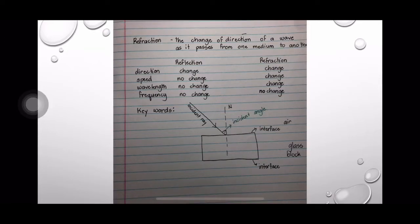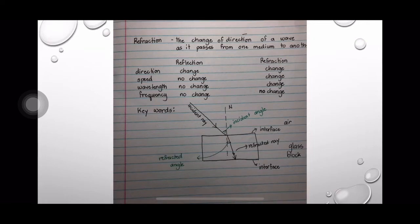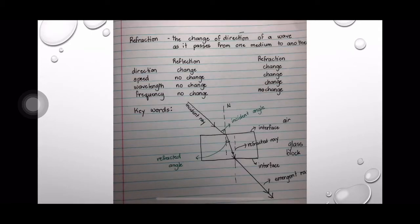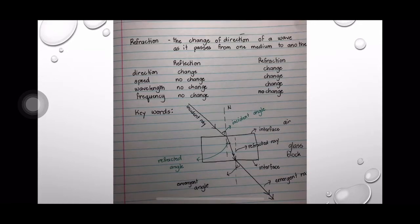As the light ray passes from air to the glass, it bends and forms the refracted ray. The refracted ray forms the refracted angle with the normal. This ray of light will emerge out of the glass block as an emergent ray, which is parallel to the path of the incident ray. The emergent ray forms an angle with the normal, called emergent angle. The emergent angle is equal to the incident angle.